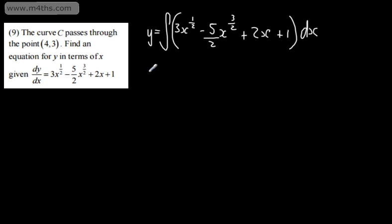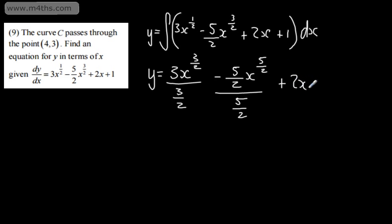I think the reason that these are more sort of exam-style questions is the wording of each. We're asked to find an equation. So y is going to be equal to 3x to the power of 3 over 2 divided by 3 over 2. And then we're going to have minus 5 over 2x to the power of 5 over 2 divided by 5 over 2. So again, these are relatively favourable for us. 2x to the power of 2 divided by 2 plus x plus our constant of integration.